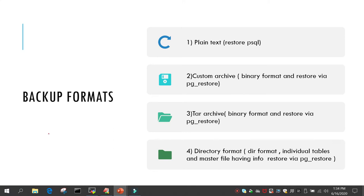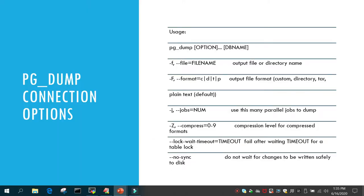The different backup formats available are: plain text, which you can restore using psql; custom archive format; tar archive, which is the Linux format; and directory format, so that you have individual tables separated. These are the different connection options. When you say pg_dump with the help flag, it will show you all the options.